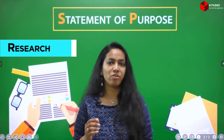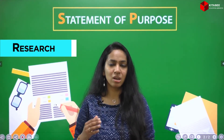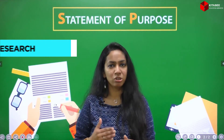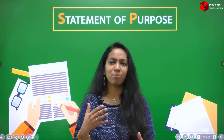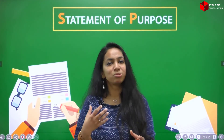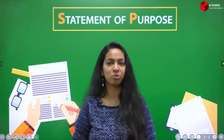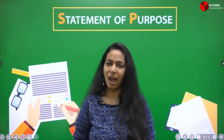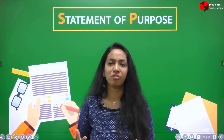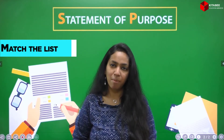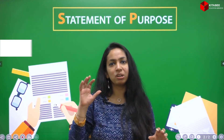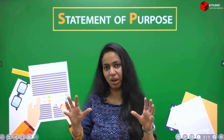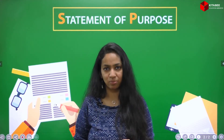Step number four: research. Research about the course, the college you are applying to, some clubs or societies it has which interest you, and anything of interest. Step number five: match the list you have prepared about yourself to the list you have prepared after researching about the college.